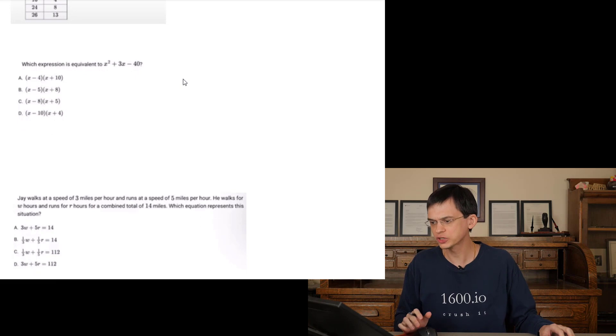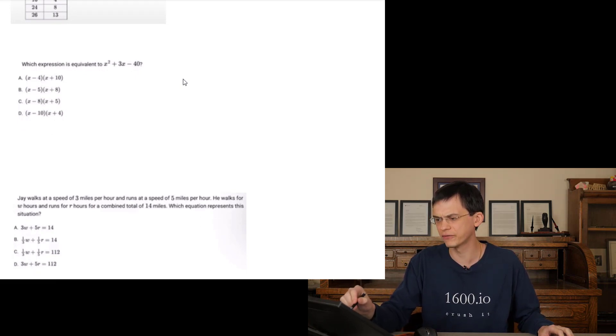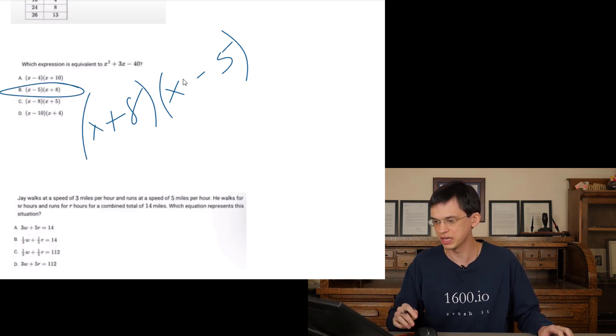B is wrong. Which expression is equivalent to this? We have to factor this. All the answer choices are in factored form. Two numbers that multiply negative 40 add to three are gonna be equal to positive eight and minus five. So X minus five X plus eight. That's B.